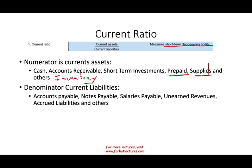Let's look at simple numbers. Assume current assets are 100 and current liabilities are 50 — the answer is 2, or 2-to-1. How do you interpret that? It means for every $1 in current liabilities, you have $2 in current assets. So you can cover your current liabilities twice with your current assets.